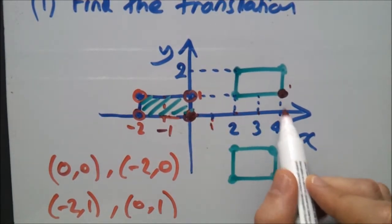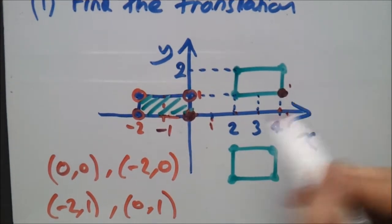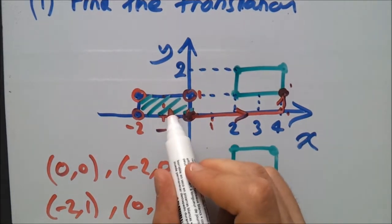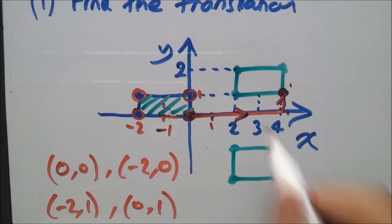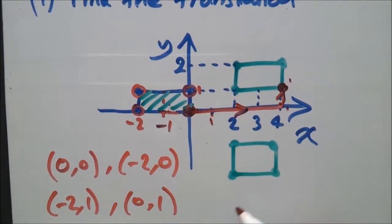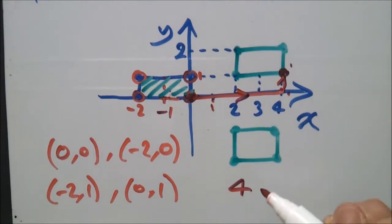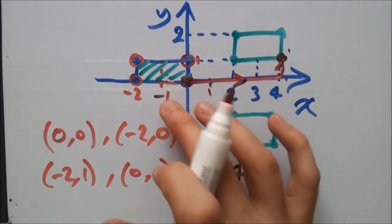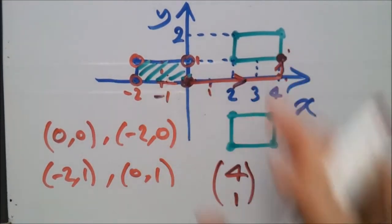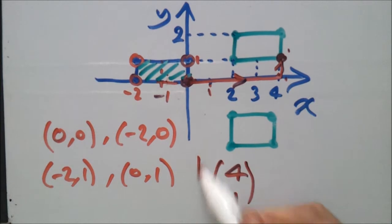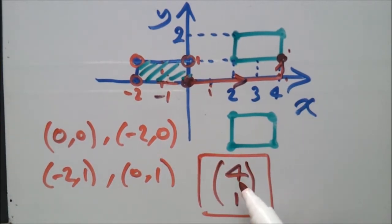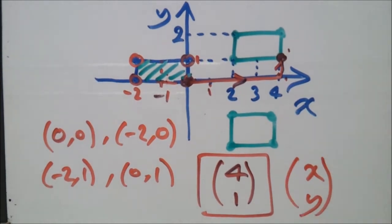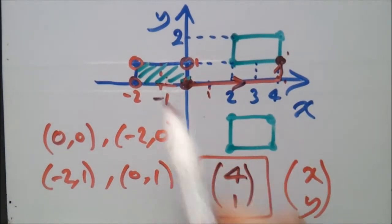To explain this transformation, we say that this shape has been translated by 4 to the x, by x 4, so 4 to the right and 1 up. The answer for this question would be from this shape to this shape would be (4,1). You've been translated by 4 to the right, 1 upwards. That's pretty much what it represents.